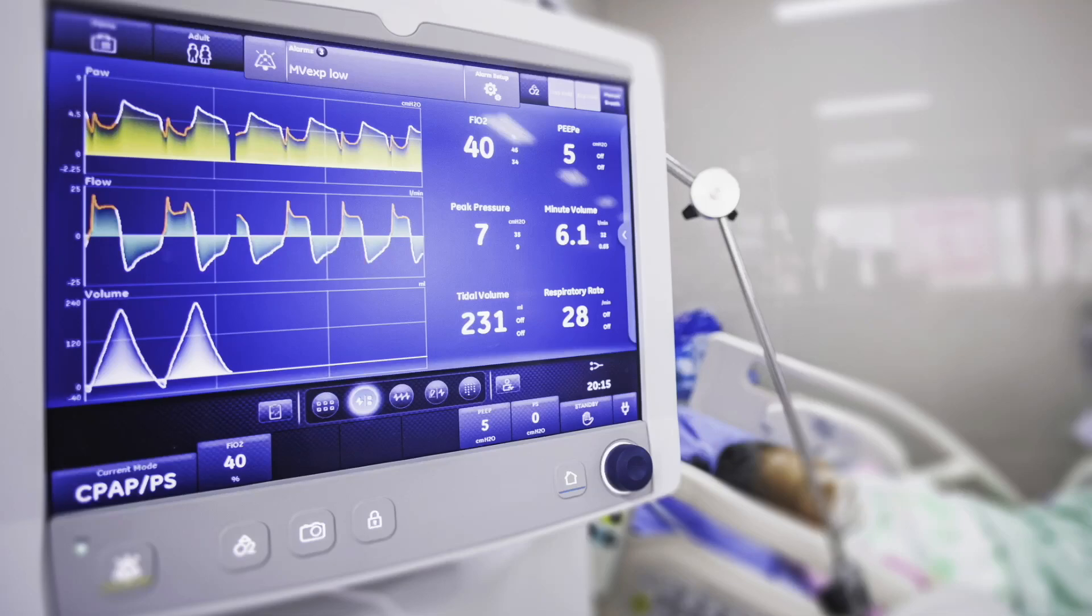How does a ventilator work? A ventilator works by forcing air into the lungs. Positive pressure is the name for this type of pressure. A patient normally exhales the air on their own, although the ventilator will do so as well.